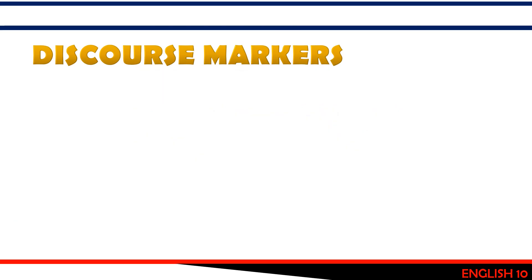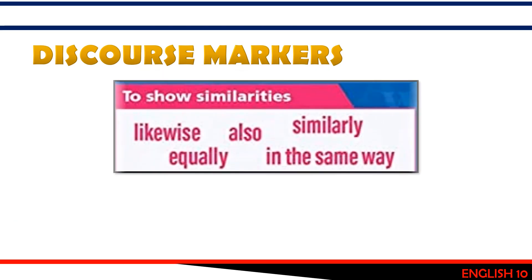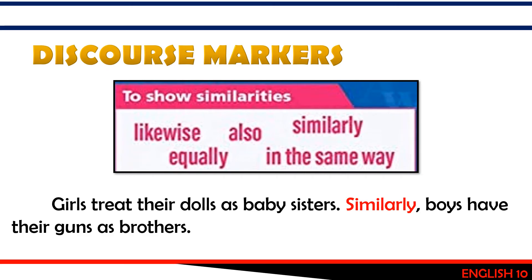The next group of discourse markers is used to show similarities. These include: likewise, equally, also, similarly, in the same way. Example: 'Girls treat their dolls as baby sisters. Similarly, boys have their guns as brothers.'